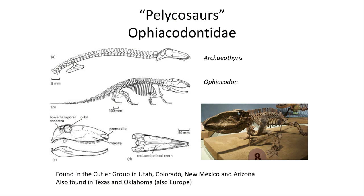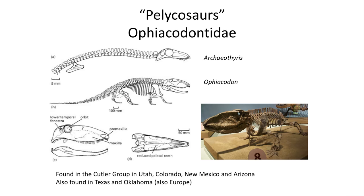The next group are the Ophiacodontidae, a group that extends from the Pennsylvanian and early Permian periods of North America and Europe, although most of their record comes from the Cutler Group in the American Southwest. Ophiacodontidae is the most primitive of the pelycosaurs, as it has a large broad snout composed of the lacrimal, maxilla, and nasal bones, with the orbit positioned in the back of the skull and a rather small temporal fenestra.